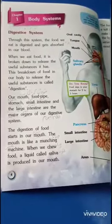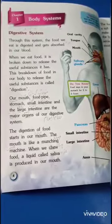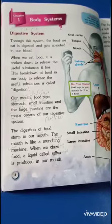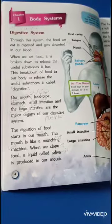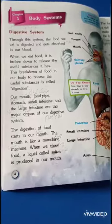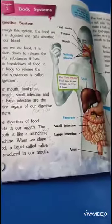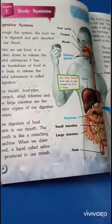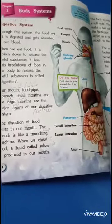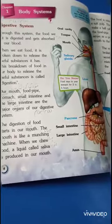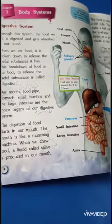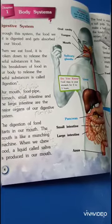Digestion is the breakdown of food in our body to release the useful substances. Digestion occurs through the digestive system. The digestive system starts from the mouth and ends at the anus. This passage from the mouth to the anus is called the alimentary canal.